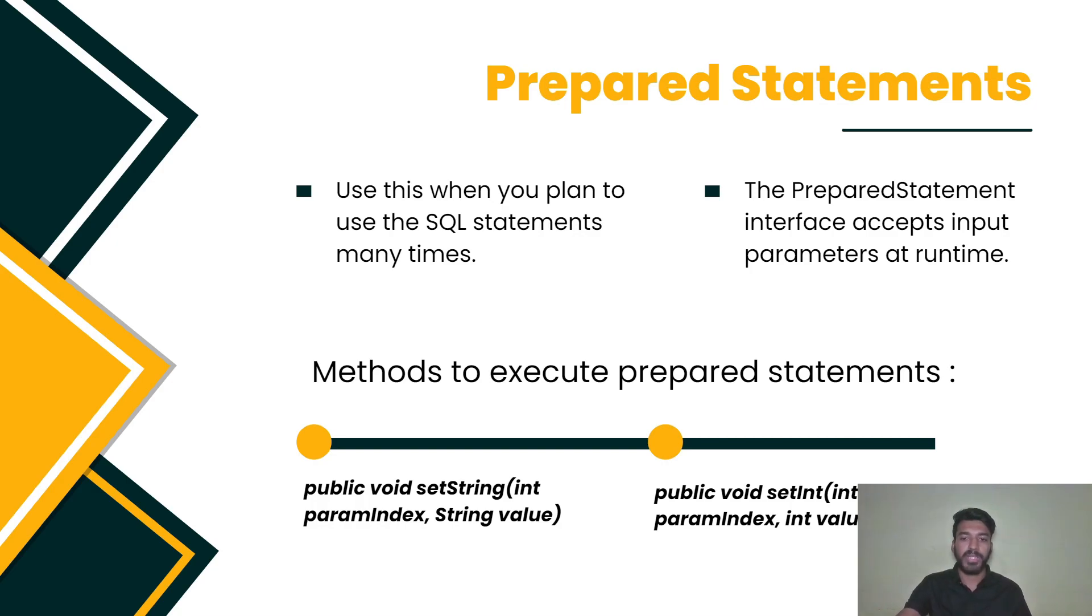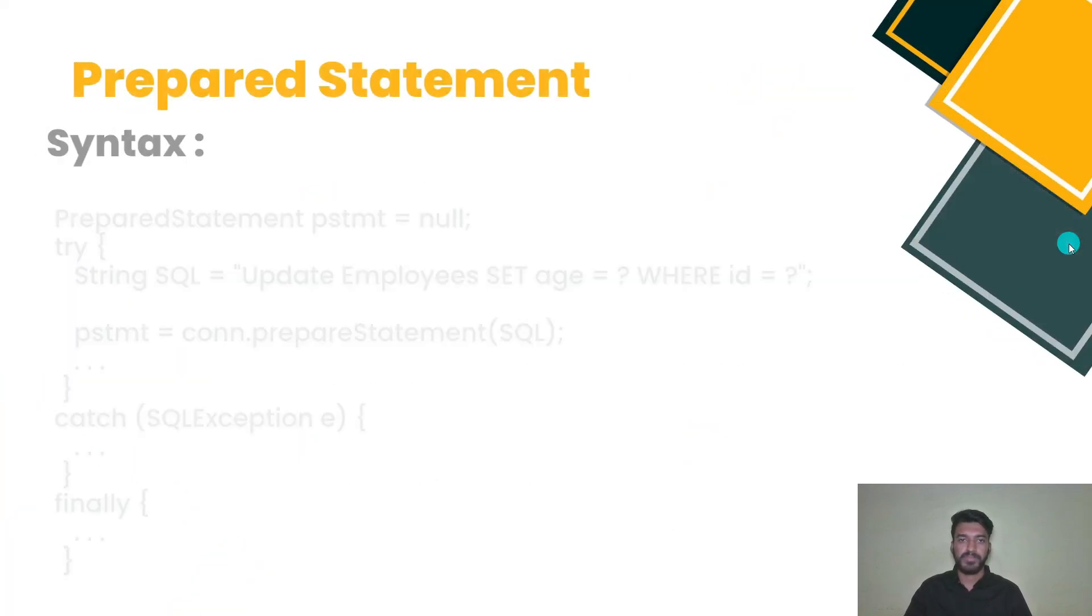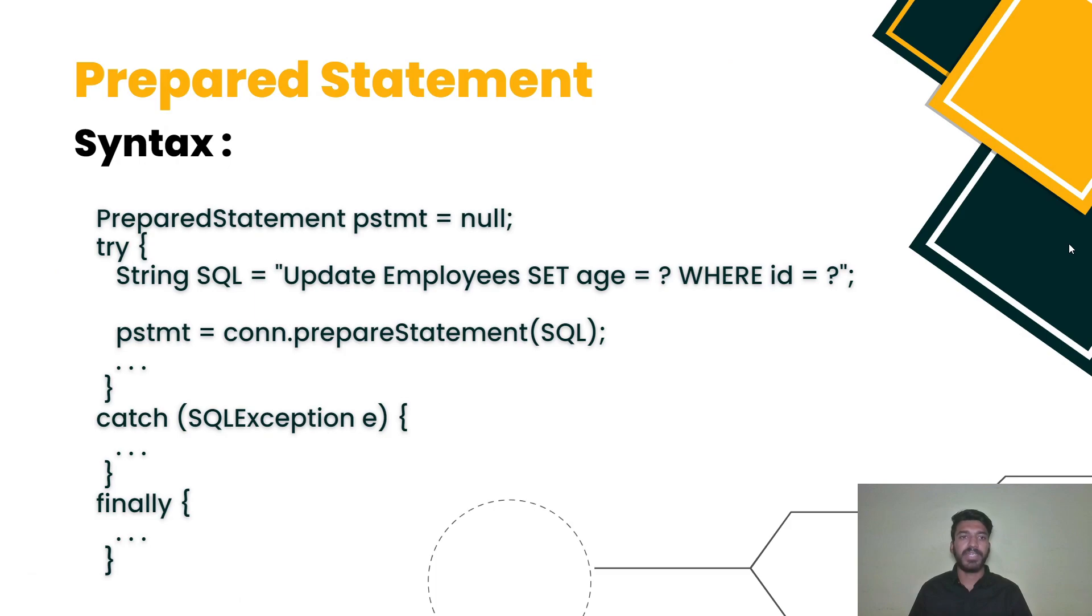Basically there are two methods in PreparedStatement. One is public void setString, in which two parameters are passed, one is integer type and second is string type. Another method is public void setInt, in which both parameters are integer type. This is the basic syntax of a PreparedStatement and how we can declare a PreparedStatement in a program.